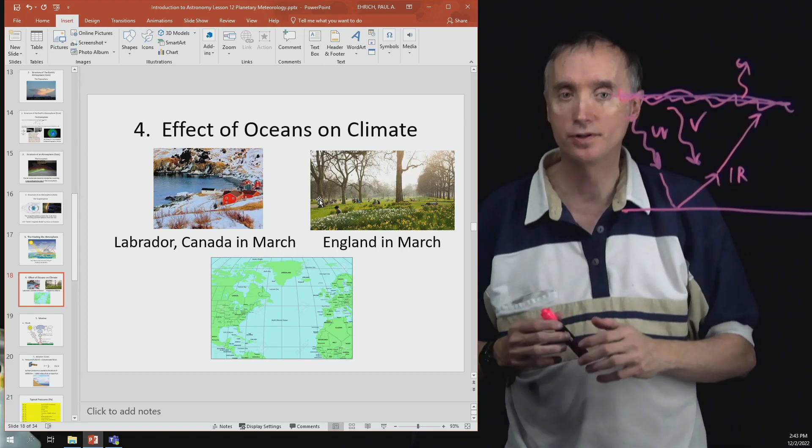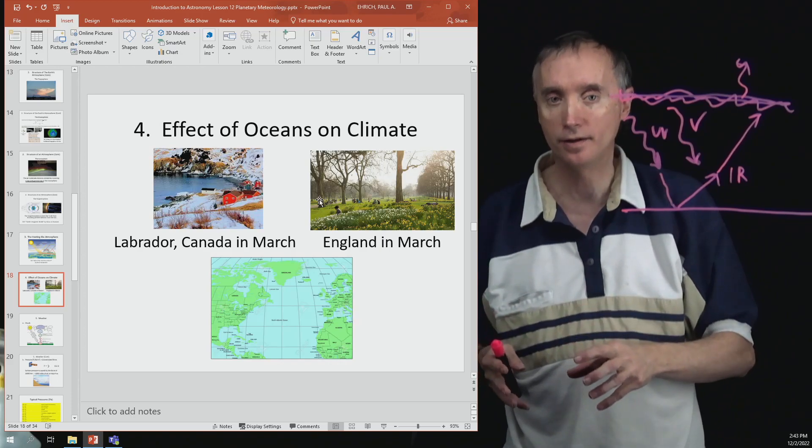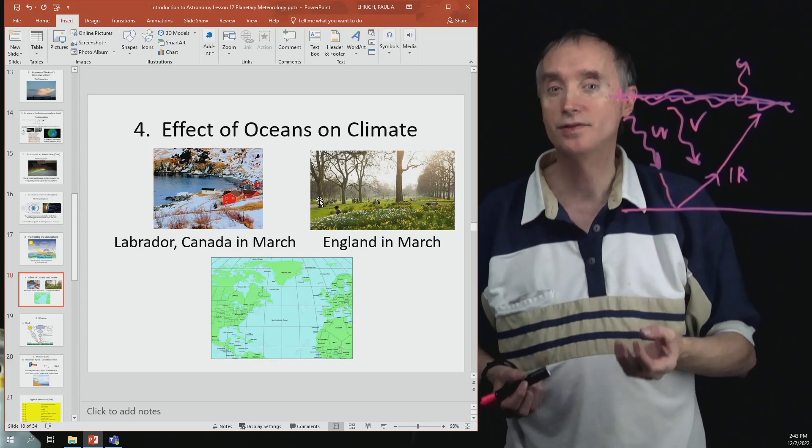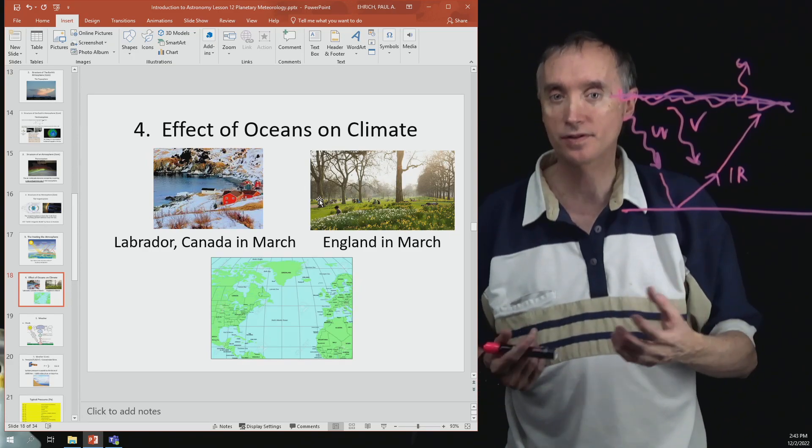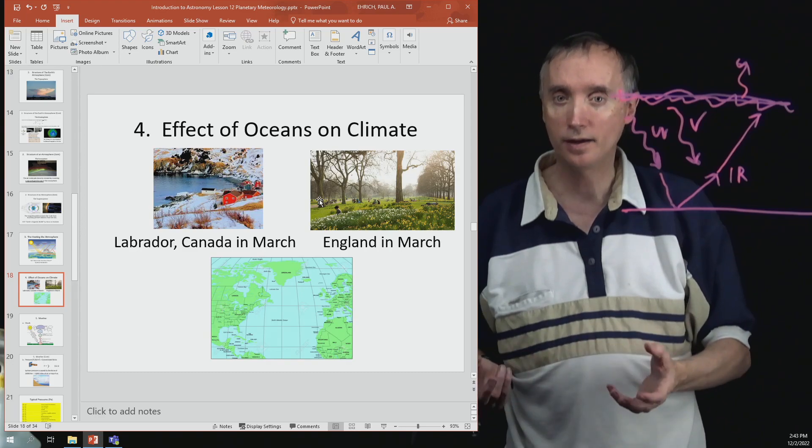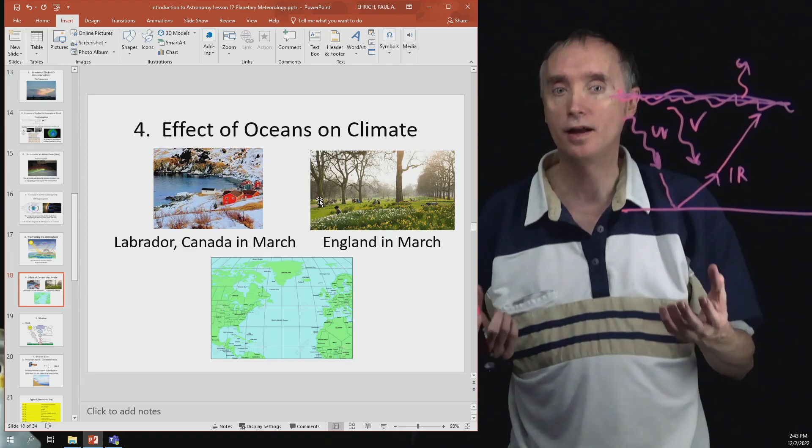Notice that both England and Labrador, Canada are at the same latitude, so that means they're both going to get about the same amount of sunlight. You would think that would mean they would have the same climates.